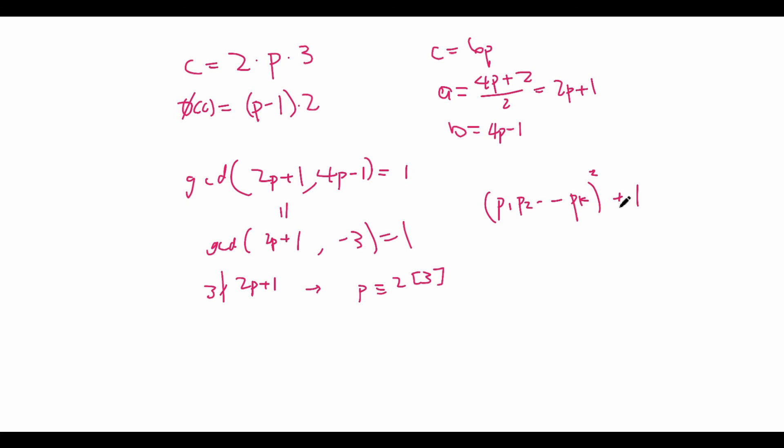Note that any prime divisor of this is relatively prime to p1 through pk. In addition, we have that p1 through pk multiplied together is going to be either 2 or 1 mod 3. So that squared is going to be only 1 mod 3. So if you add 1, it's going to be 2 mod 3. So we have this expression that's 2 mod 3 that is relatively prime to all primes that are 2 mod 3. And that's a contradiction. You can't have that.